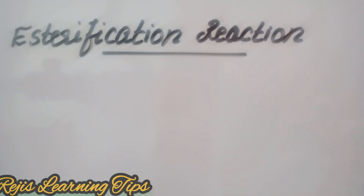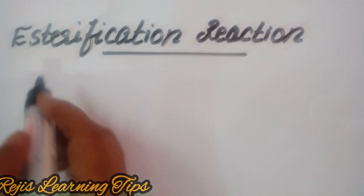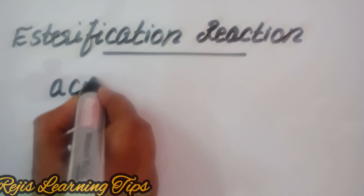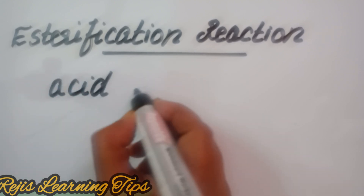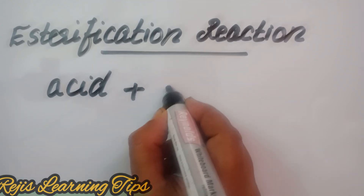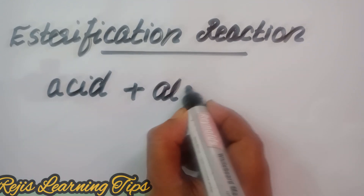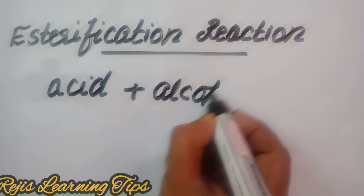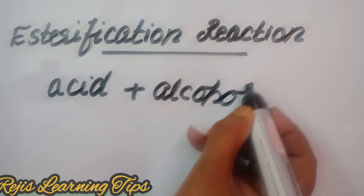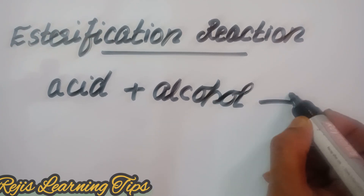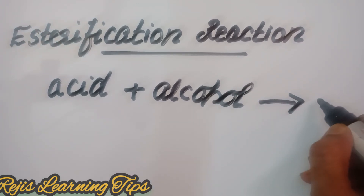Esters are most commonly formed by the reaction of an acid and alcohol. When an acid reacts with an alcohol, it forms an ester.